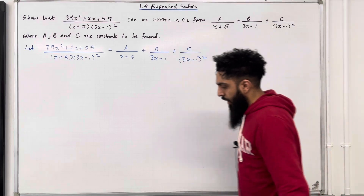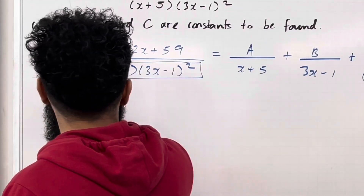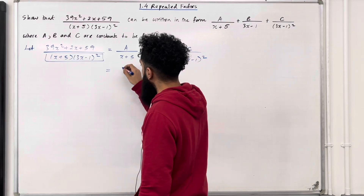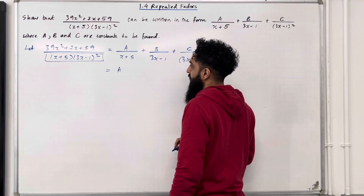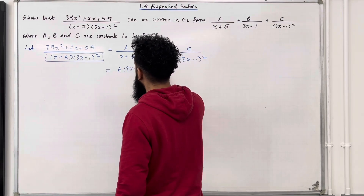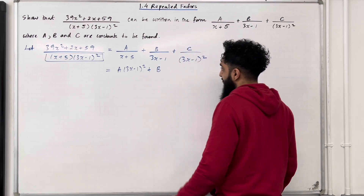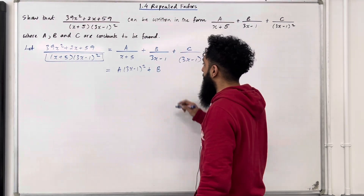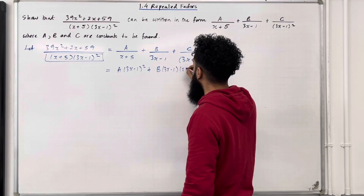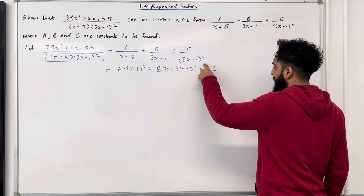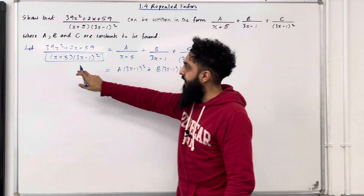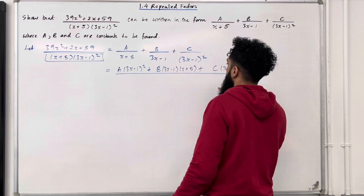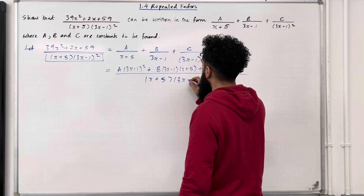Now we're going to combine these three fractions. We want a common denominator of (x + 5)(3x − 1)². So we multiply A by (3x − 1)², multiply B by (3x − 1)(x + 5), and multiply C by (x + 5), all over the common denominator (x + 5)(3x − 1)².